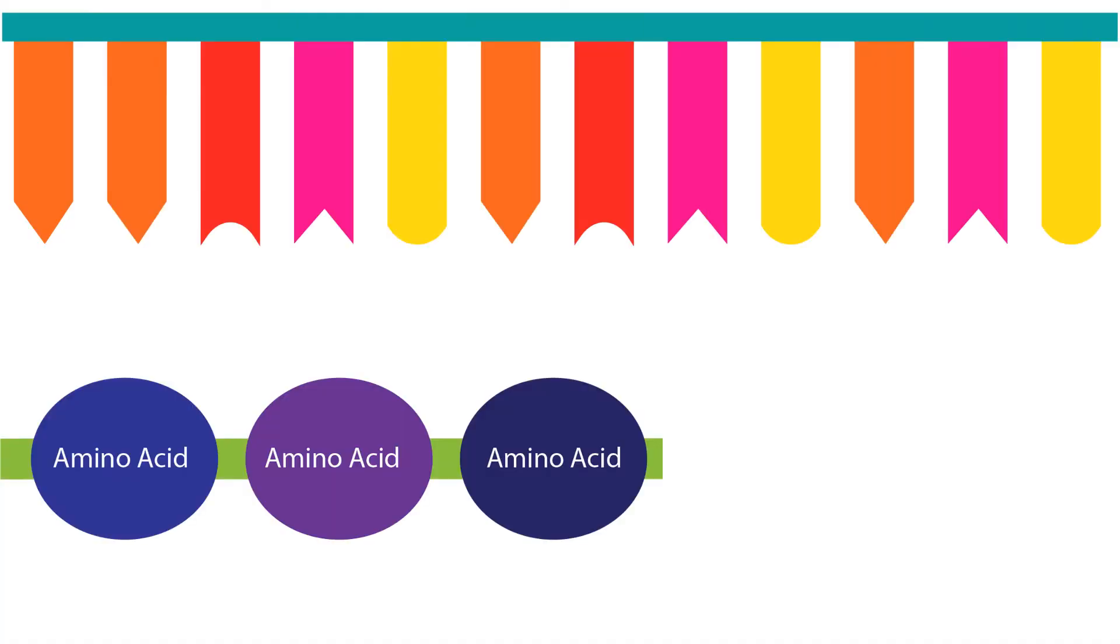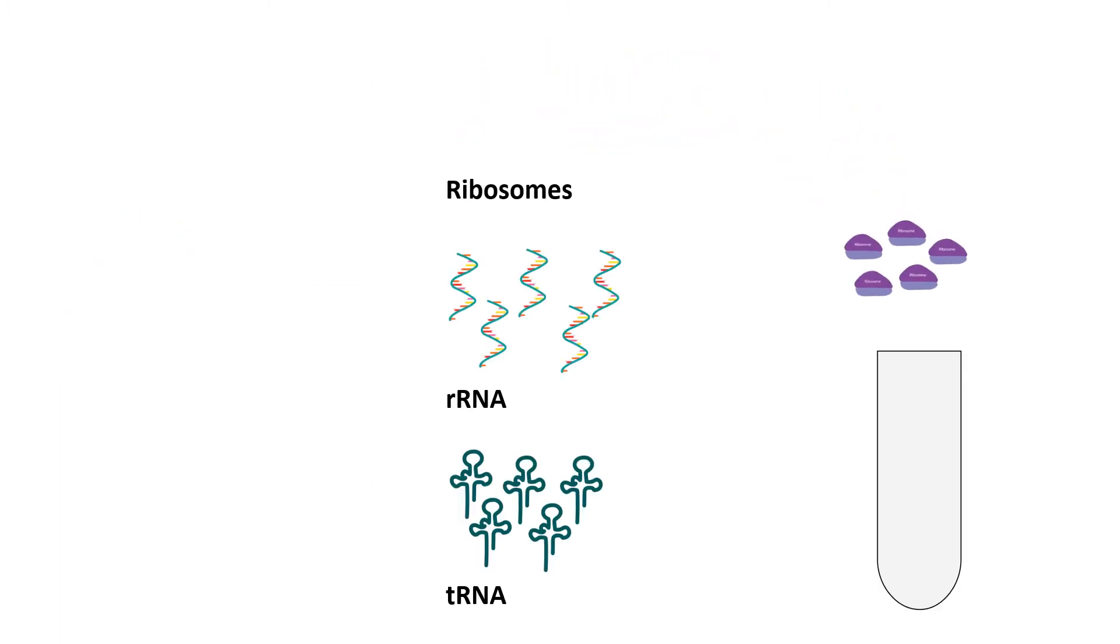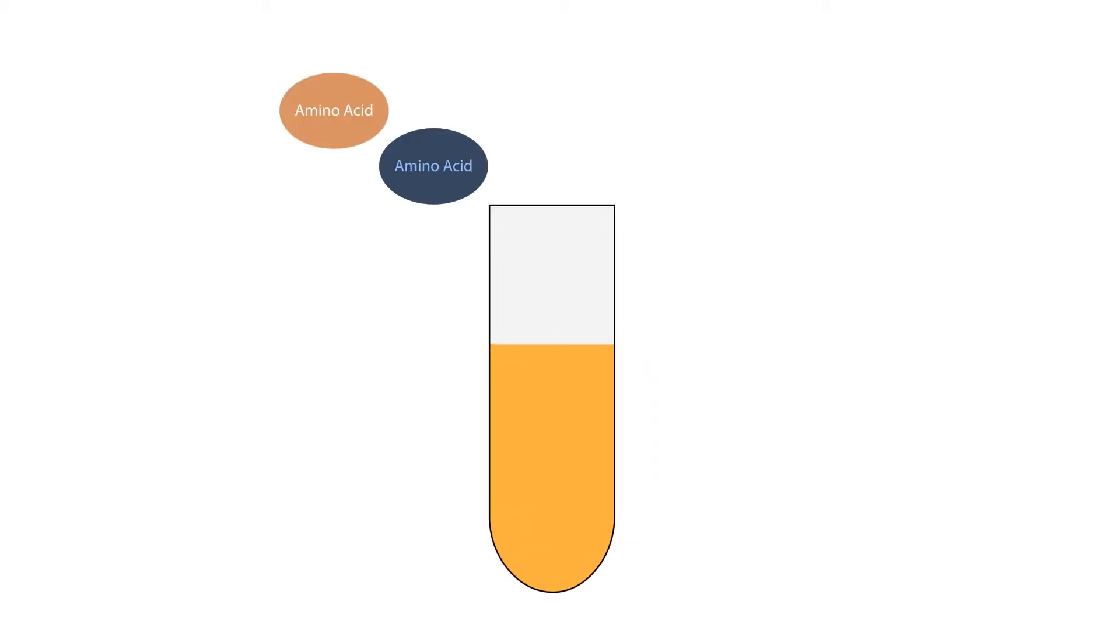Nirenberg and Matai created a cell-free system that could synthesize proteins so that the interaction between RNA and amino acids could be easily manipulated. They purified ribosomes, ribosomal RNA, and transfer RNA from E. coli cells, and used this material along with ATP as an energy source, as well as some salts and buffers required to keep the system stable. At the time, they called transfer RNA soluble RNA, and did not know why it was important, just that it was vital for protein synthesis.